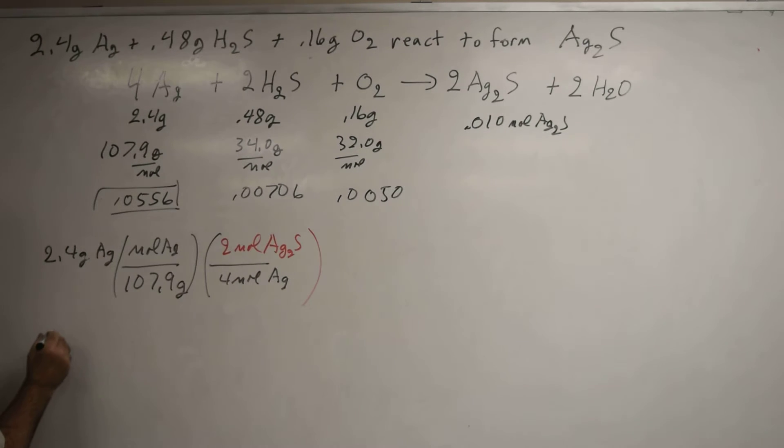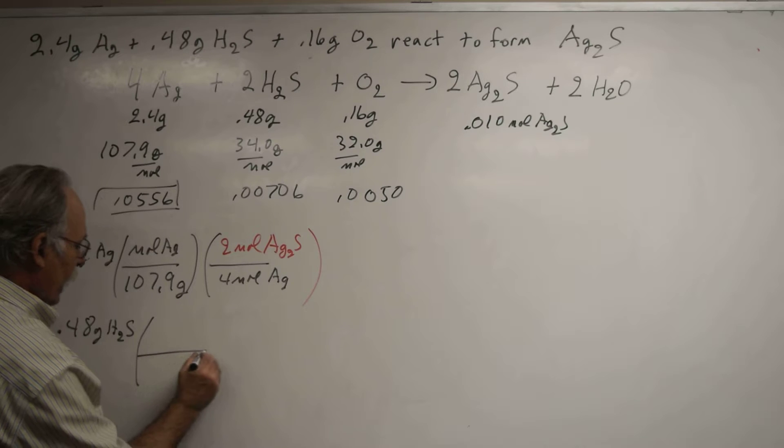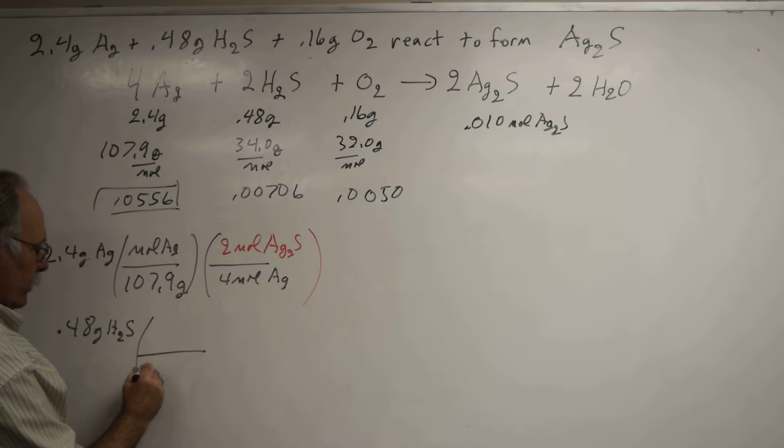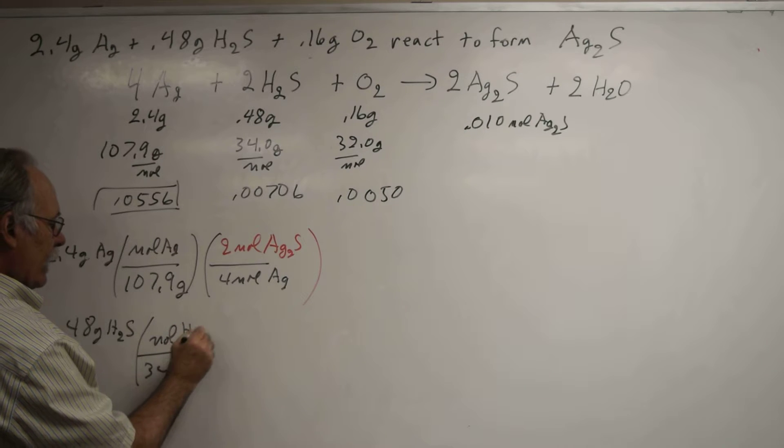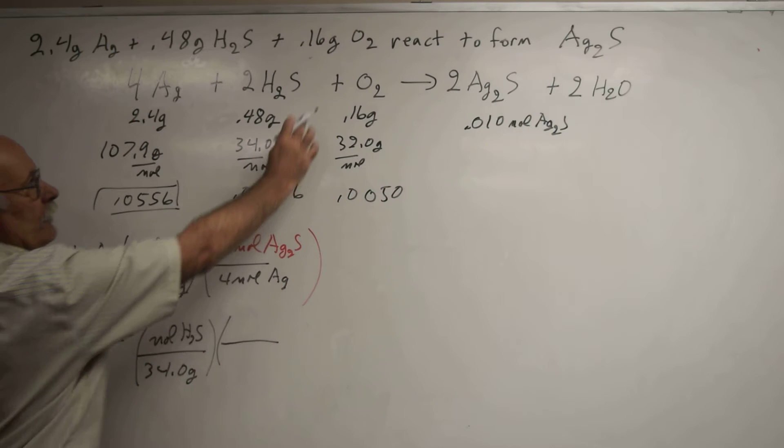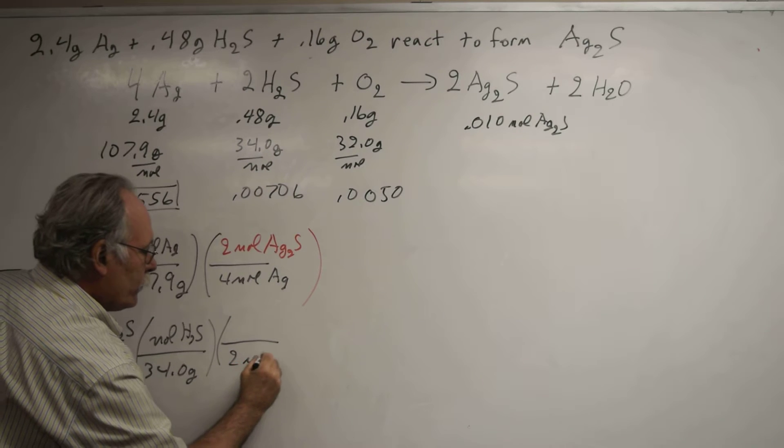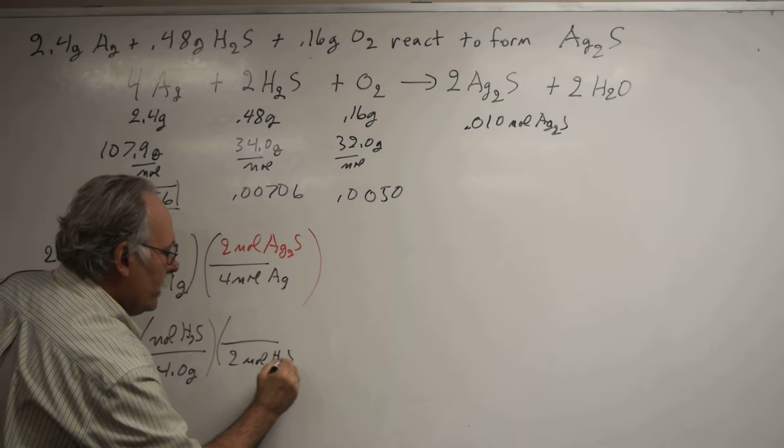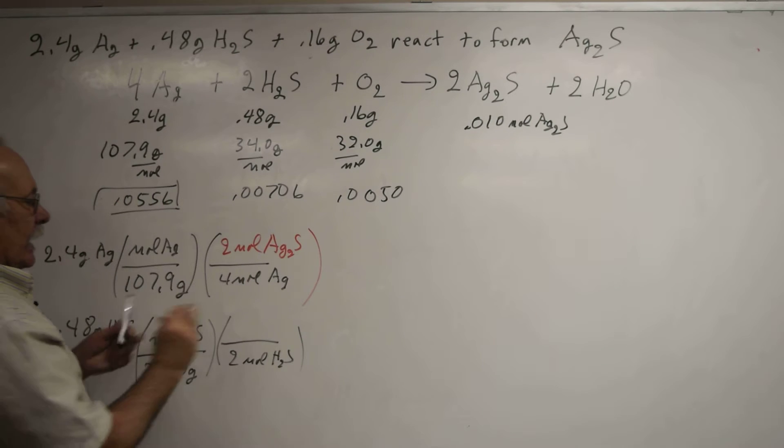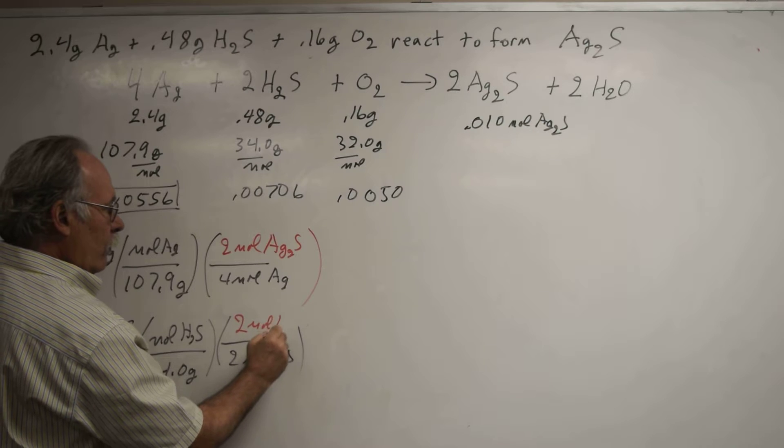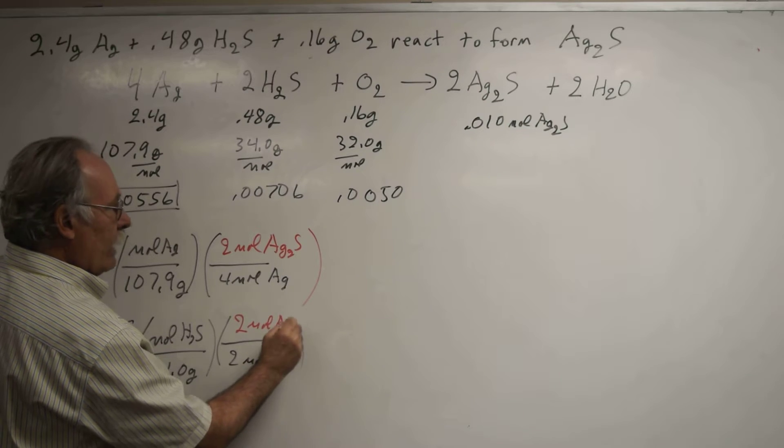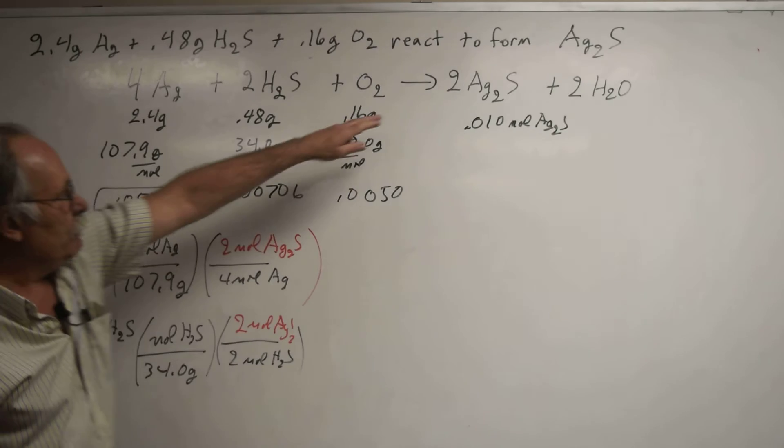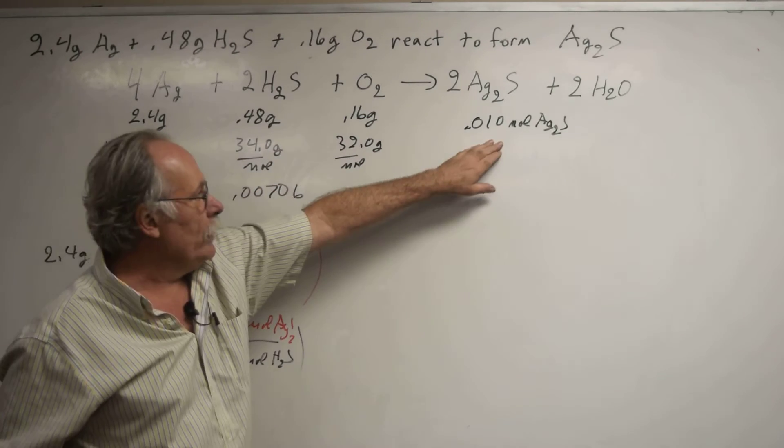I could have taken H2S—I started with 0.48 grams of H2S, then divided by its molar mass, 34.0 grams per mole of H2S. Then I divided by its coefficient, which was 2 moles H2S. That number was 0.0076. I could have multiplied that by 2 moles of Ag2S to calculate the moles produced. Two times this is bigger than 0.01.